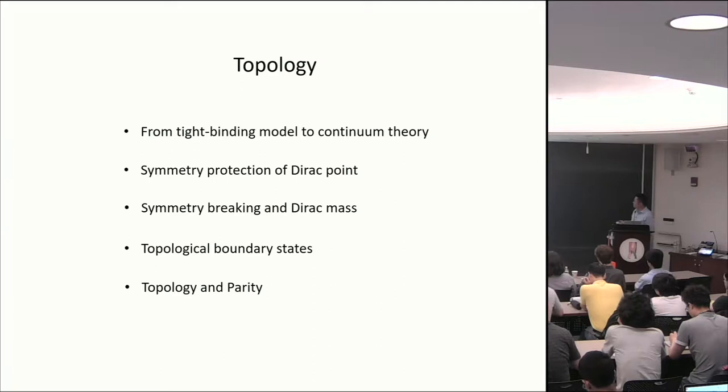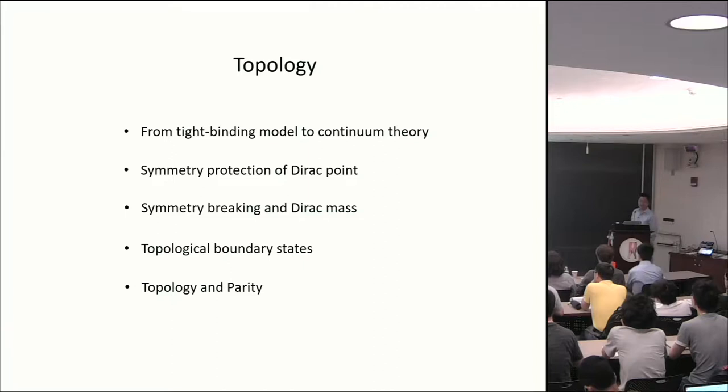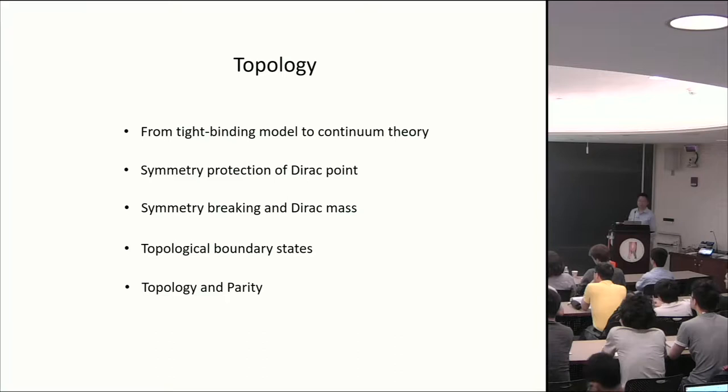This is the outline of the first lecture. I'm going to start with tight binding models of graphene, showing how the Dirac fermion arises in the continuum limit, and spend some time discussing the symmetry protection of these Dirac points — what makes graphene gapless. Then I'll talk about various ways of breaking the symmetry and introducing the Dirac mass, which leads to gapped states. Many of them are topological with interesting topological boundary states. I'll also discuss how topology can be inferred by the parity of the electron wave function.